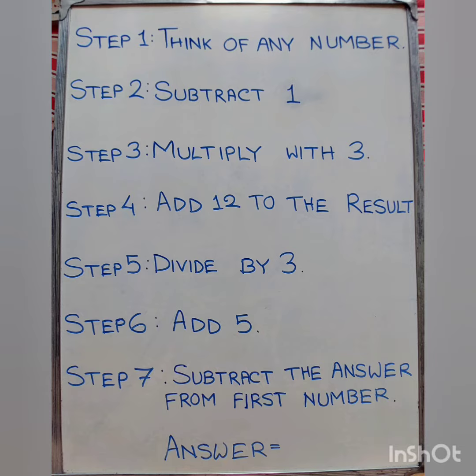Step 1: Think of any number. Step 2: Subtract 1. Step 3: Multiply with 3. Step 4: Add 12 to the result. Step 5: Divide by 3.